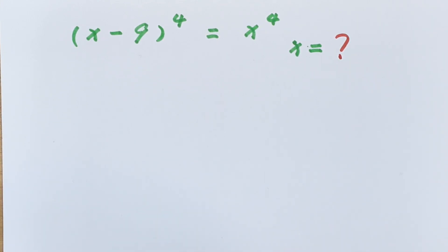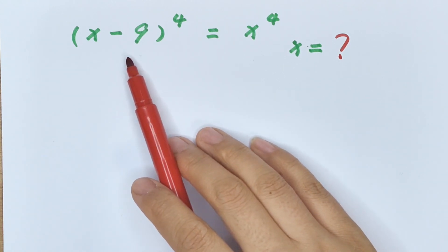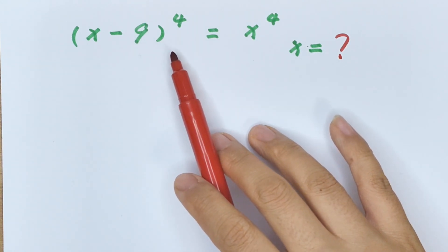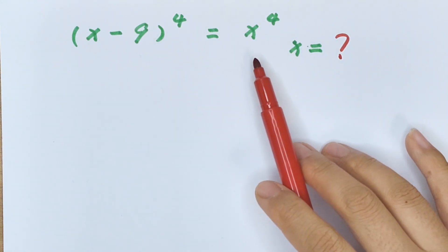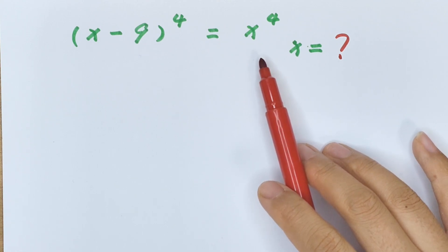Hello everyone, welcome to Math4U. How to solve (x minus 9) to the power of 4 equals x to the power of 4.